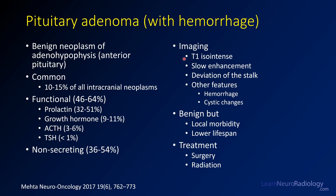On imaging, pituitary adenomas tend to be T1 iso-intense. They may show slow enhancement. On early post-contrast images they'll be hypo-intense to the surrounding gland, and that will gradually fill in. They often result in deviation of the pituitary infundibulum and can also have hemorrhage and cystic changes.